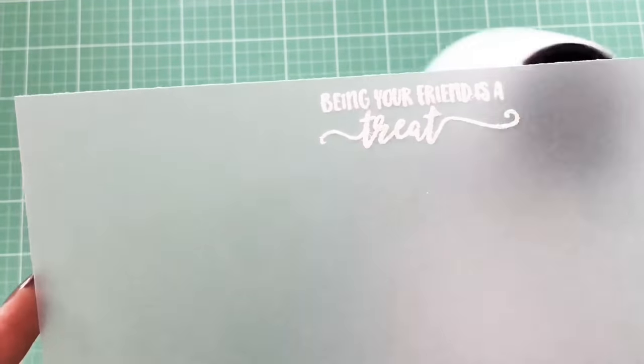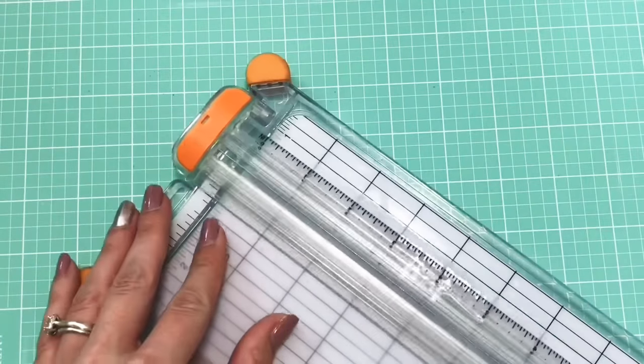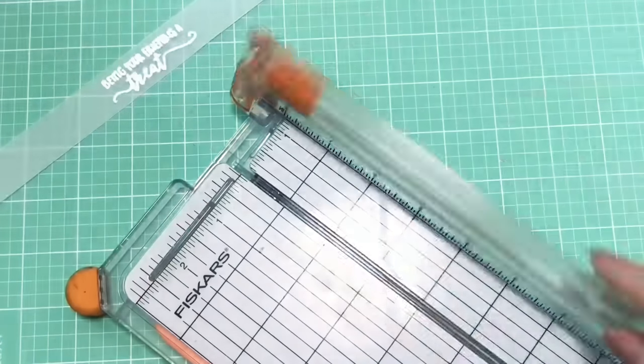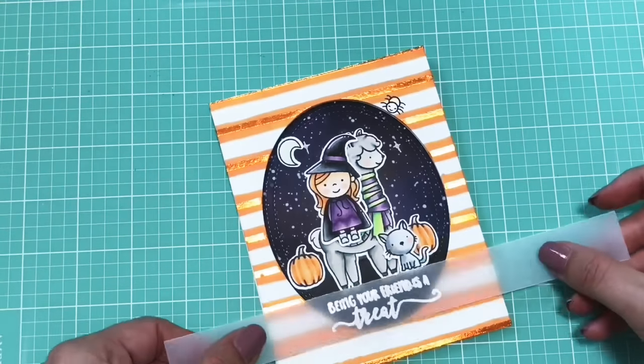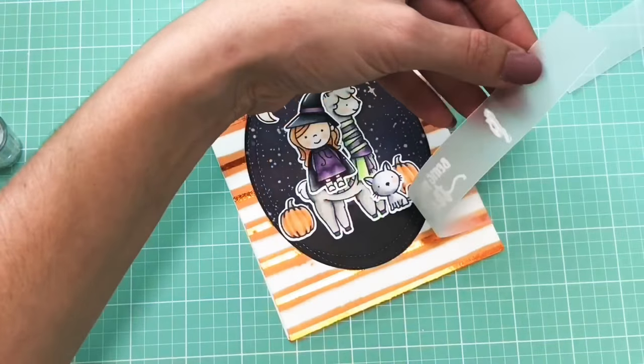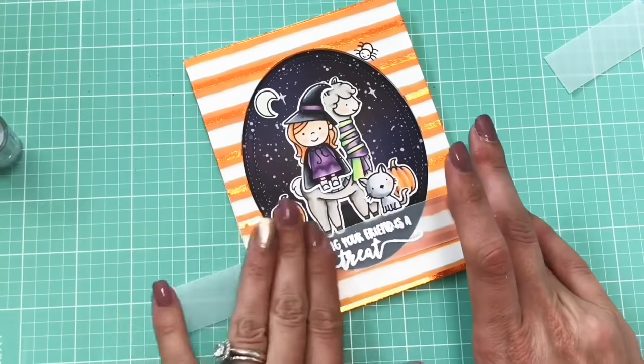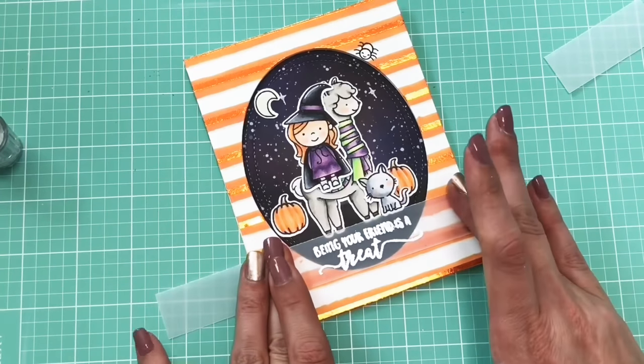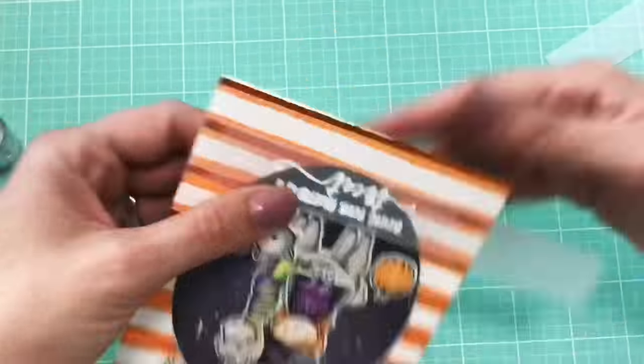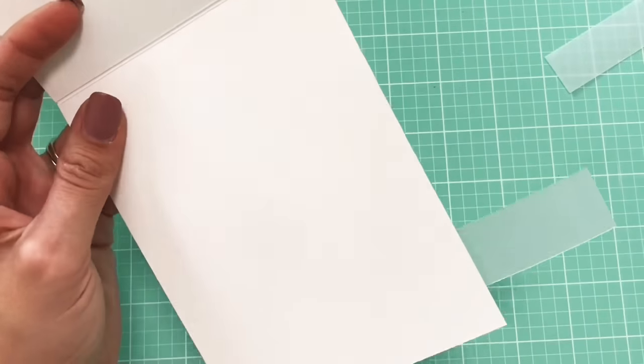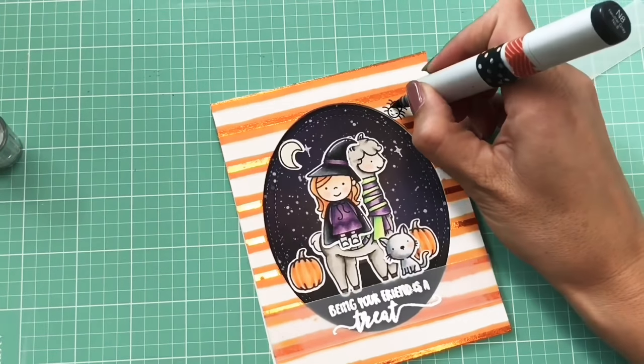My final thing I'm working on here is just doing some heat embossing with the sentiment that comes in the stamp set. I'm just white heat embossing that on some vellum. Heating up the back first so that the powder doesn't fly all over the place. I'm going to cut that out. I'm just going to wrap that around the front of the card here. Putting a little bit of glue.